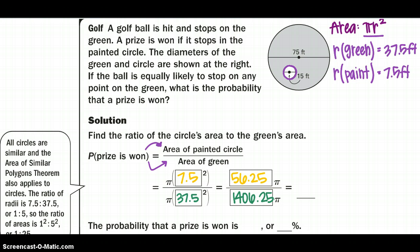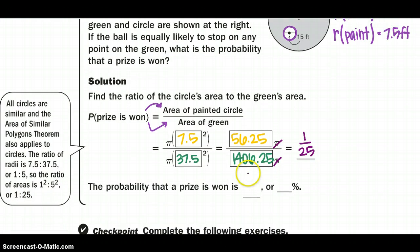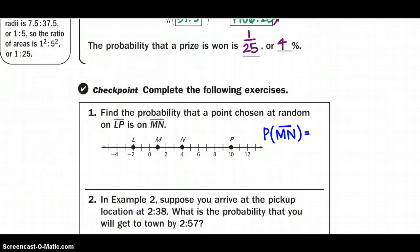And notice, I didn't include the pi in my calculations, because that pi cancels out, which is really nice. I'm going to reduce that down to 1 over 25. So that's the probability that it will happen. And not a very good chance. That's why a hole in one is super hard to get. So 1 over 25 is the probability to win a prize, or 4%. Let's do a couple of examples down here.